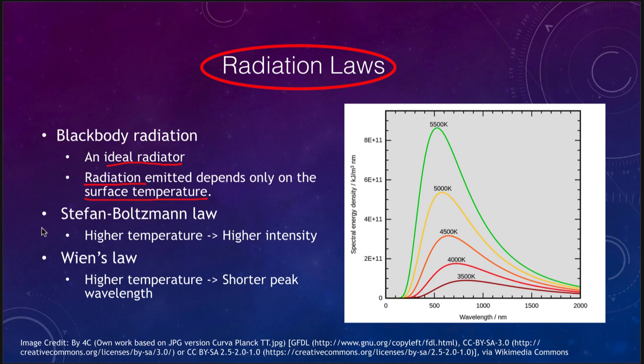Now let's look at these two laws. The first one, the Stefan-Boltzmann law, tells us that the higher the temperature, the higher the intensity at any wavelength. So when we look at these stars in the graph here, we have stars ranging from 3,500 Kelvin to 5,500 Kelvin. If you look at the curve for 5,500 Kelvin, it is always above the curve for 3,500 Kelvin. So it emits more light, it emits more energy at all wavelengths overall.